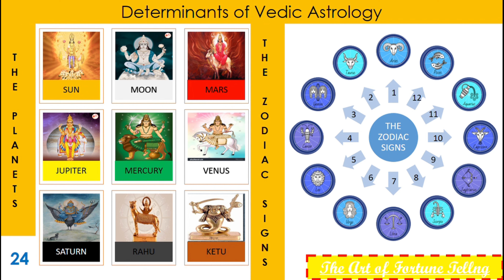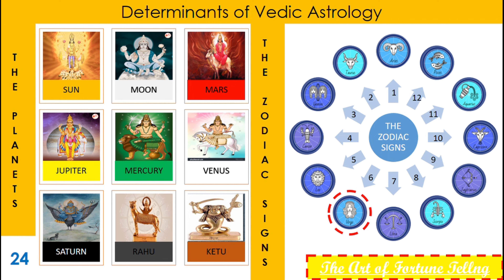Now we discuss the zodiac signs. There are 12 zodiac signs: Aries, Taurus, Gemini, Cancer, Leo, Virgo, Libra, Scorpio, Sagittarius, Capricorn, Aquarius, and Pisces. The first sign is Aries and the twelfth is Pisces. We will discuss in detail about each sign and each planet's attributes in our coming videos.